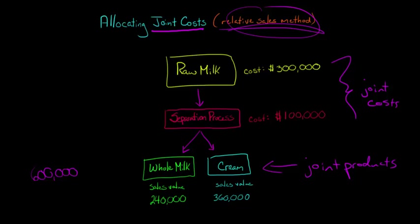And then we could take, for the cream for example, we could take the $360,000 and divide that by $600,000, and that's going to give us 60%. Now with the whole milk, we take $240,000 and divide that by the $600,000. So we're taking the sales value specific to the product, and that yields 40%.